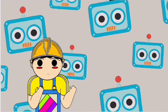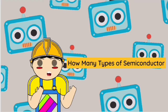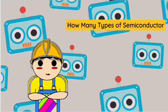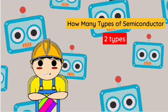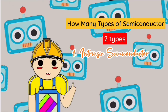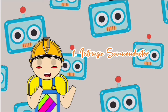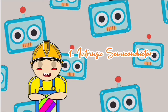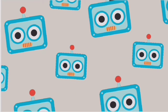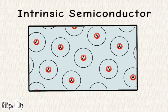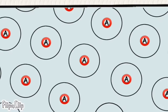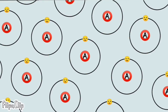We all know how many types of semiconductors there are. Basically, there are two types of semiconductors. One is intrinsic semiconductor and the other is extrinsic semiconductor. First, we talk about intrinsic semiconductor. This is a semiconductor which is in extremely pure form.